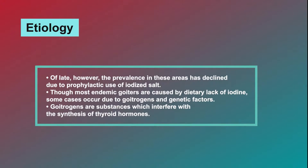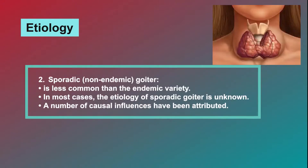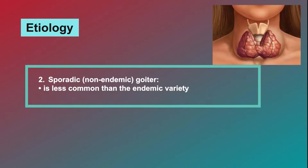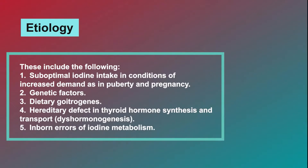Goitrogens are substances which interfere with the synthesis of thyroid hormones. Sporadic non-endemic goiter is less common than the endemic variety. In most cases, the etiology of sporadic goiter is unknown. A number of causal influences have been attributed, including: suboptimal iodine intake in conditions of increased demand as in puberty and pregnancy; genetic factors; dietary goitrogenics; hereditary defect in thyroid hormone synthesis and transport, known as dyshormonogenesis; and inborn errors of iodine metabolism.